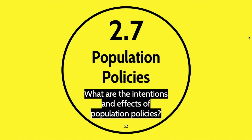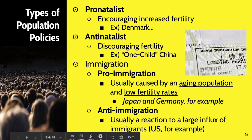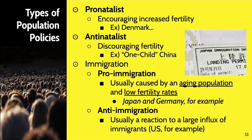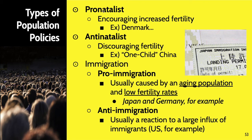So, last but not least — what does the government do about this? When we have population policies, what are the intentions and effects of these policies? As the government sees their population changing, what can they do about it? We're going to talk about four stances they can take. Two of these policies are natalist policies — one is pro, one is anti. Pro-natalist means you're encouraging increased fertility. This was like in Denmark, where the government actually supported and financed a marketing campaign to get people to go on vacation and have more children, because they saw that their fertility rate was dropping.